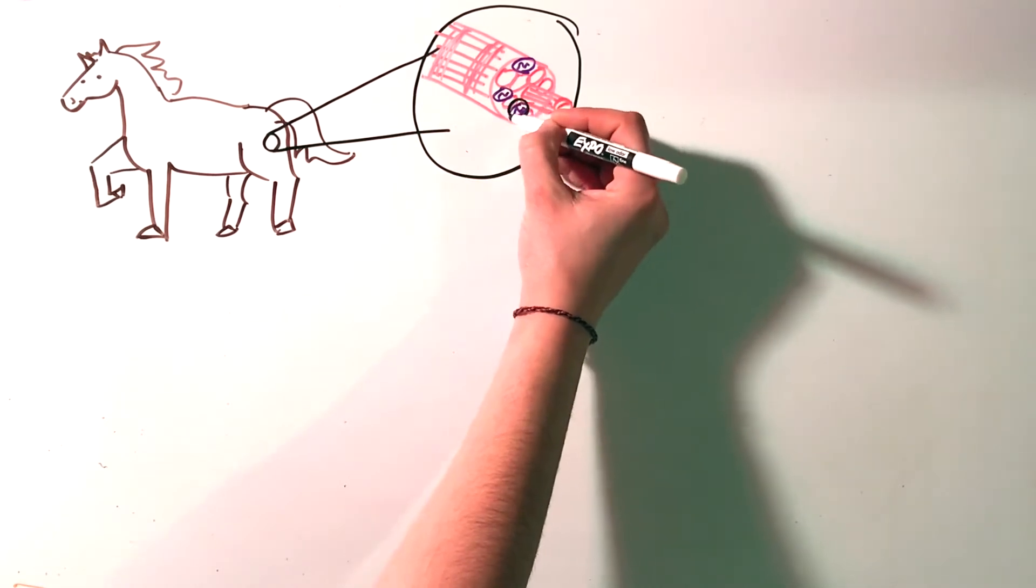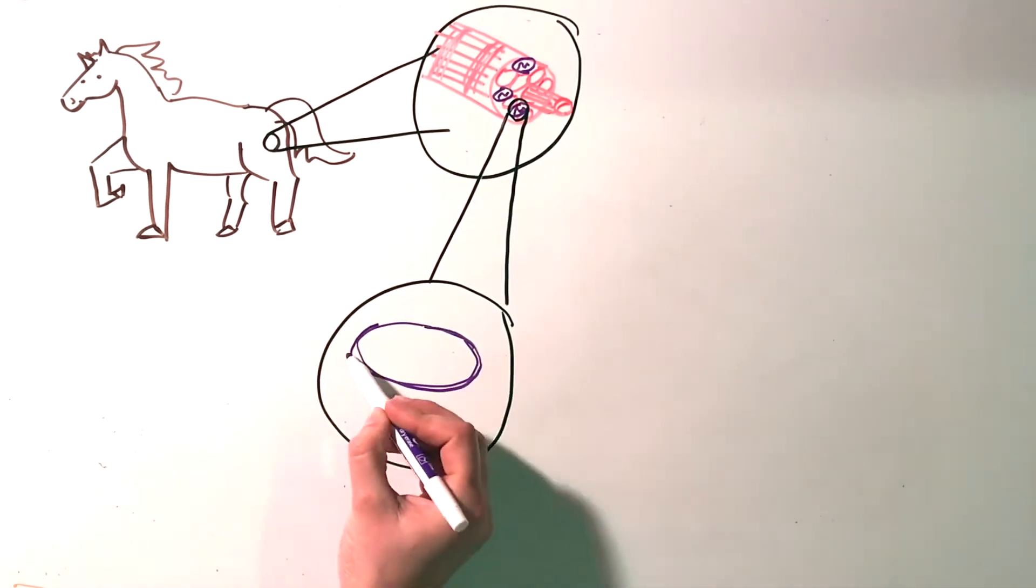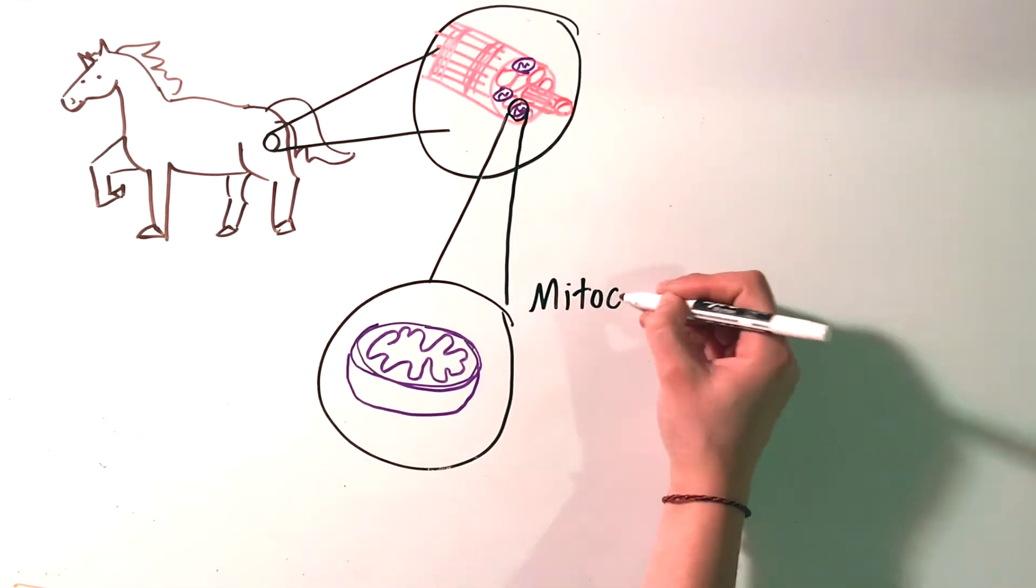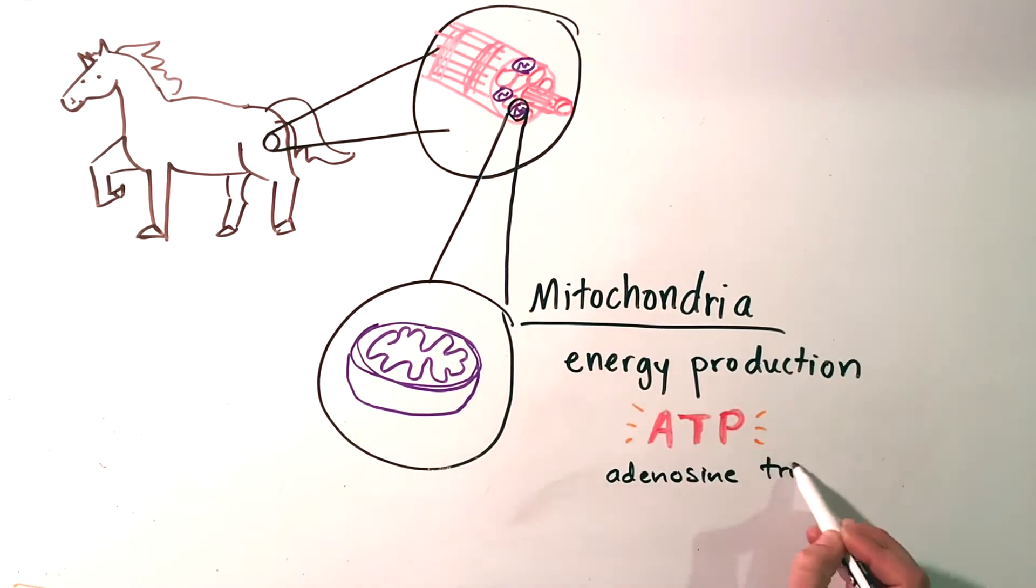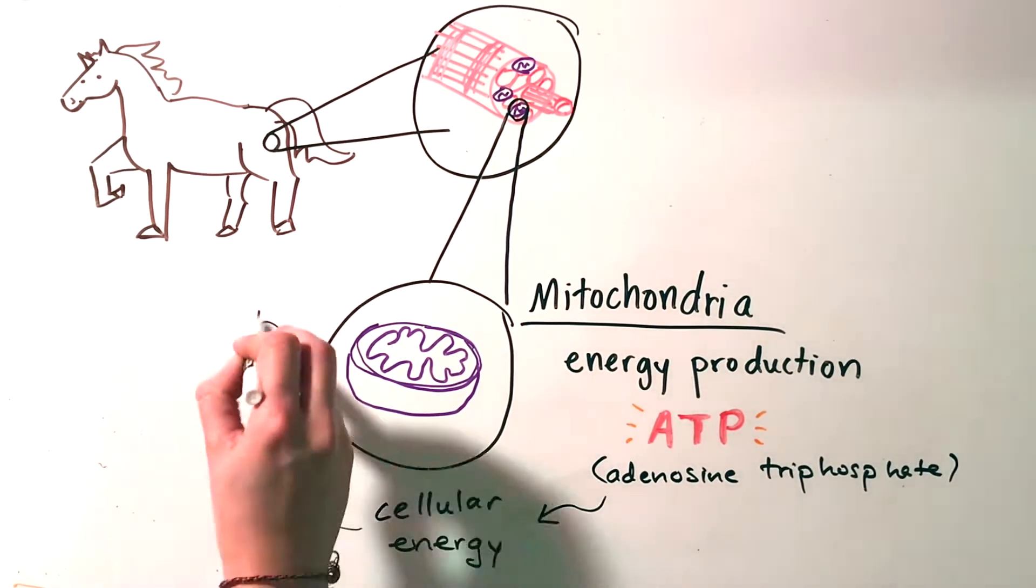Here's a muscle cell. Tiny organelles within the cell, shown here in purple, are called mitochondria. They are responsible for converting nutrients into usable energy called ATP or adenosine triphosphate. 95% of cellular energy is powered by ATP.